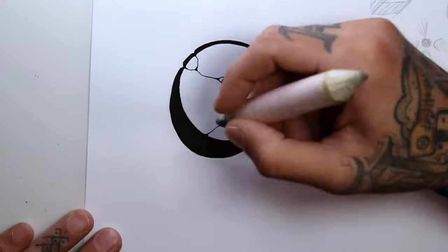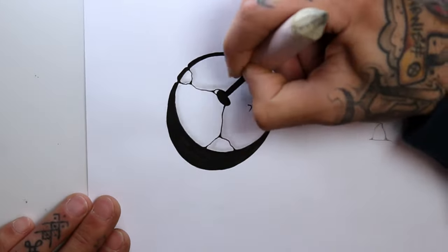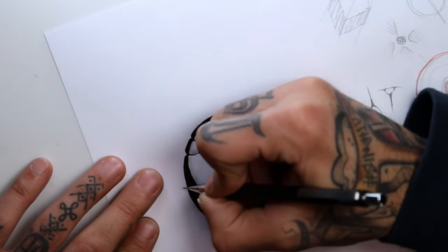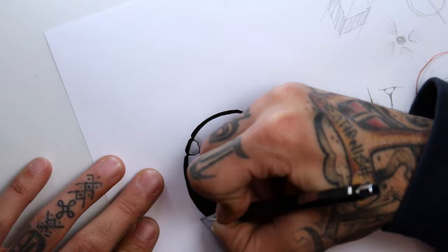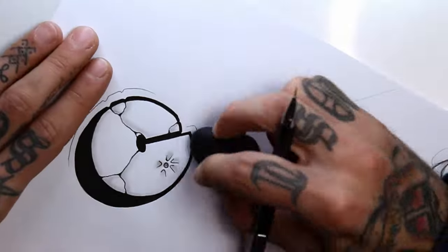Now with the blending stump, you can shade the cracks on the side of the drop shadow to give the letters some volume. Now around the letter I'll do an interrupted outer line with the micron pen so the main focus will still be the letter and not the lines around it.